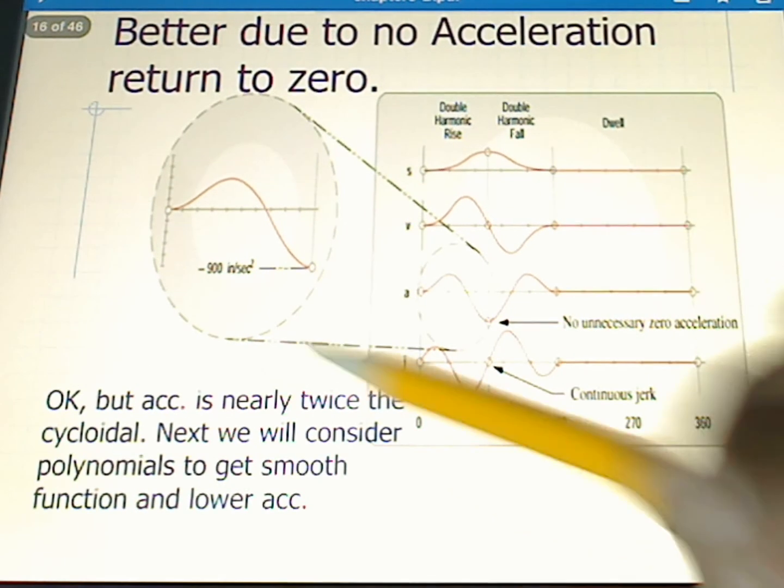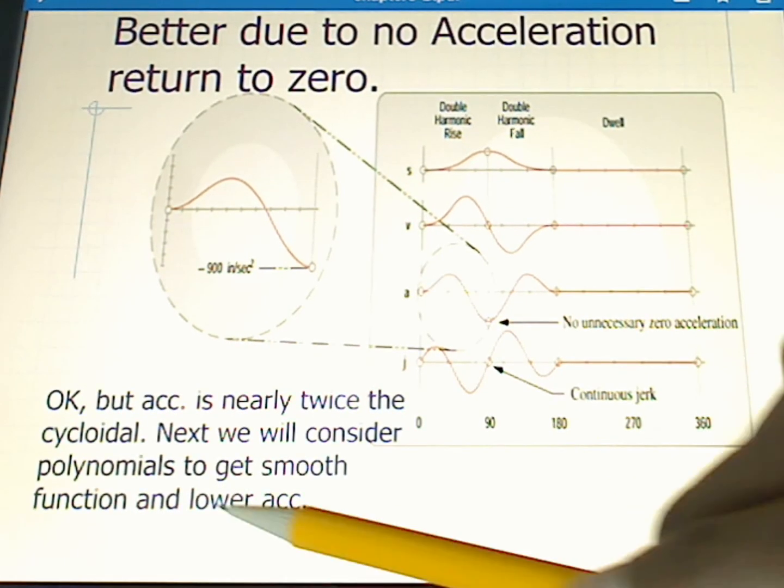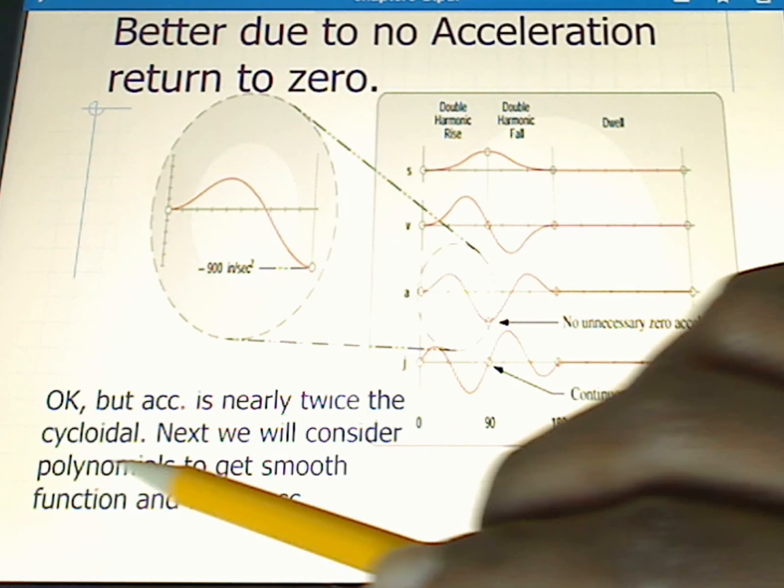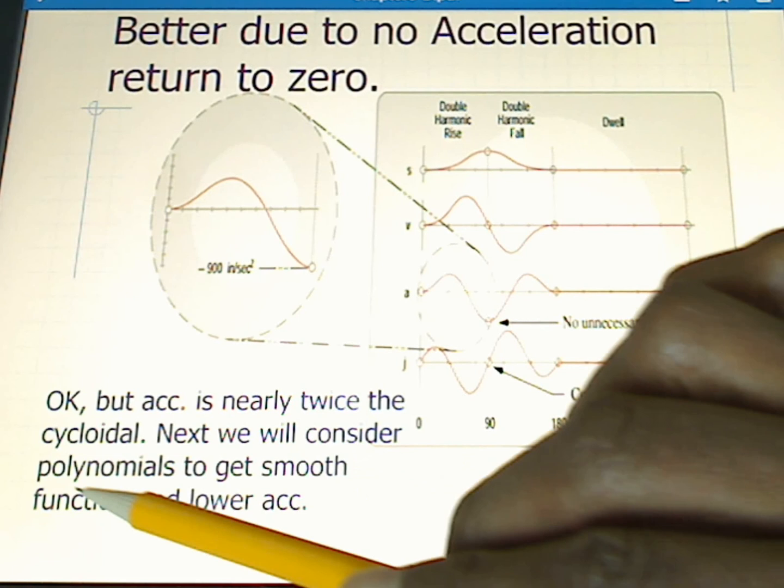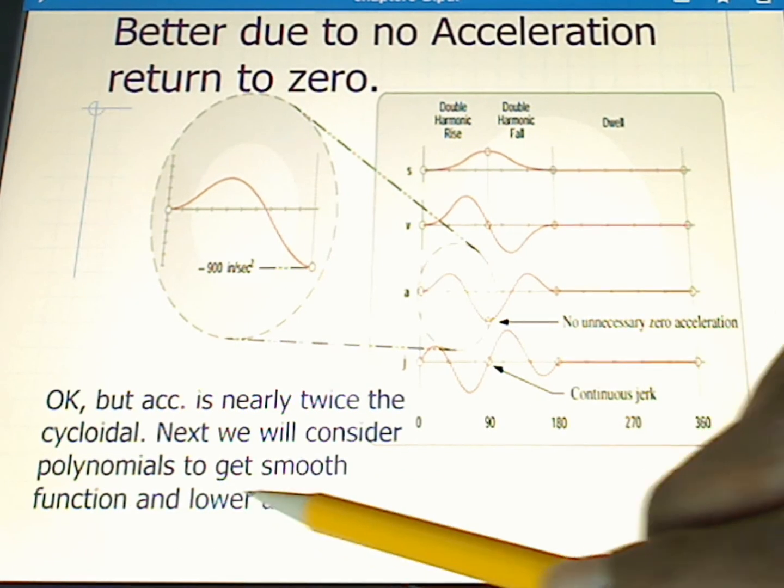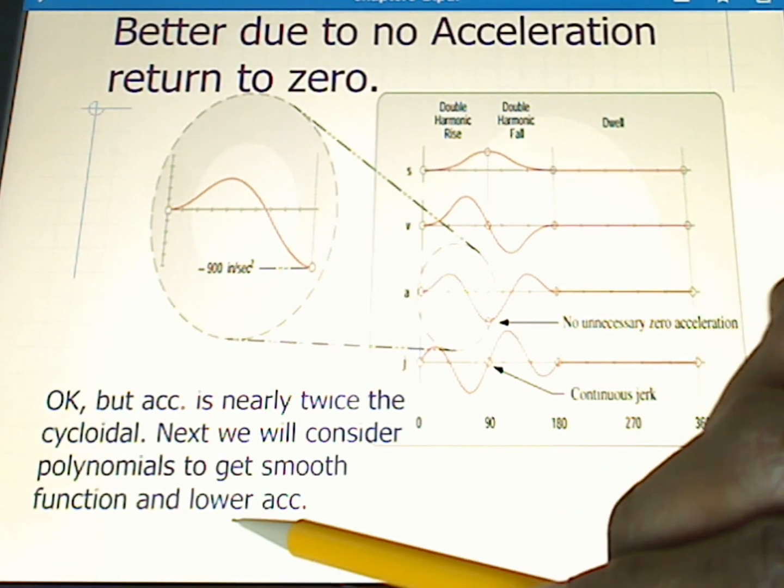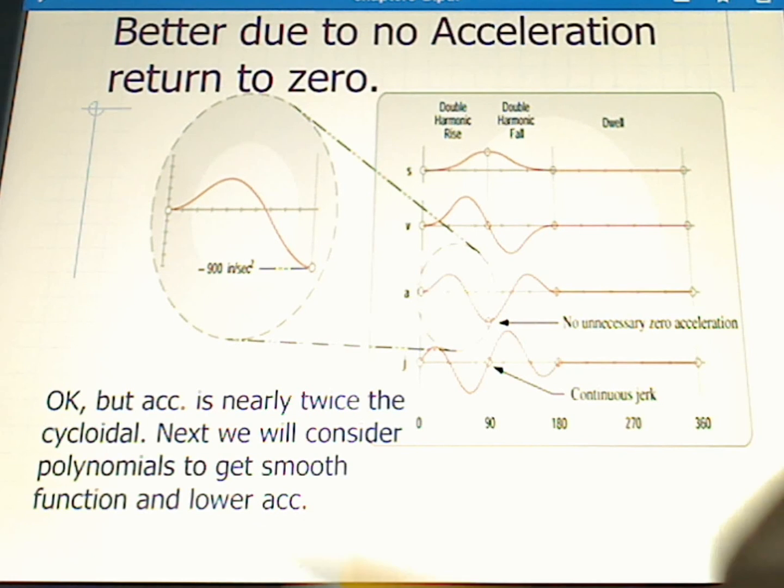So while this is okay as a design, the acceleration is nearly twice what it was in the cycloidal. What we'll do next time is we will consider a polynomial which will give us a smooth function and lower our maximum acceleration.